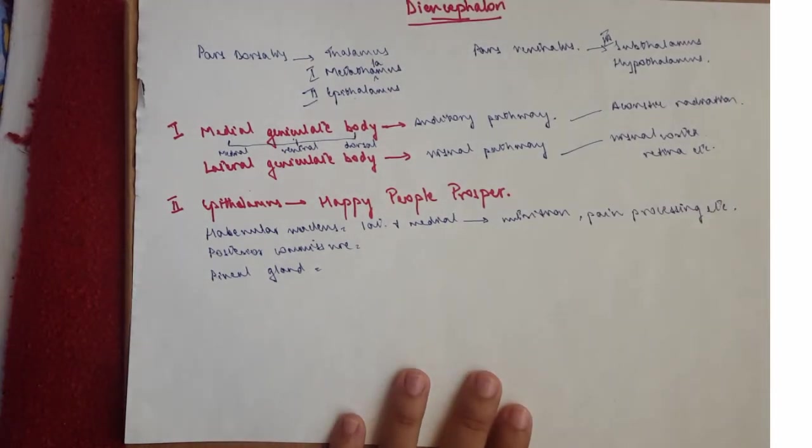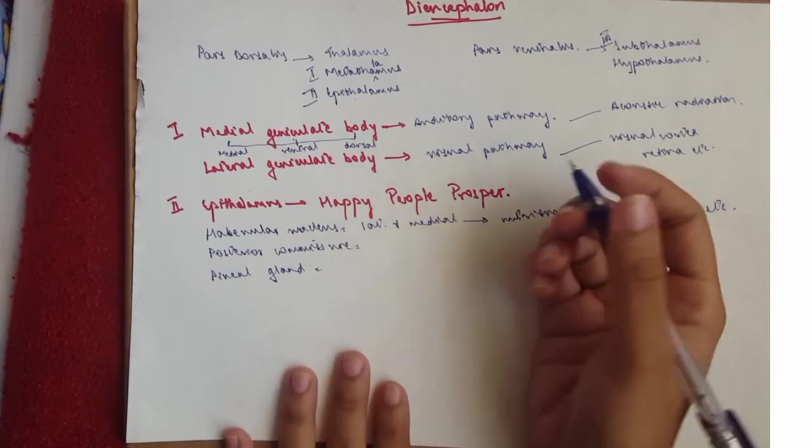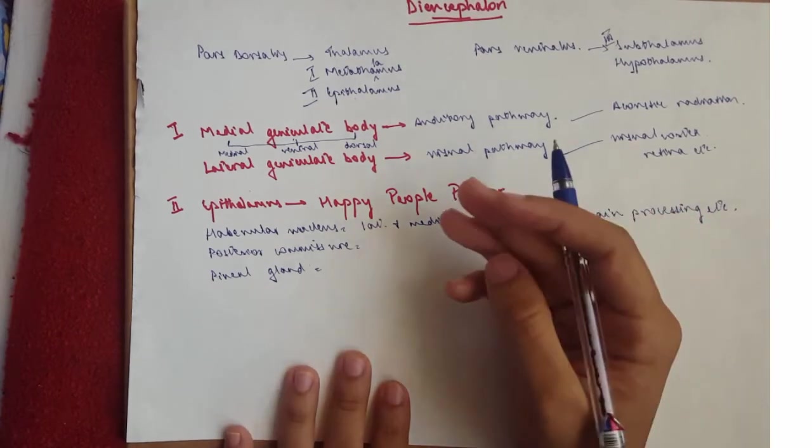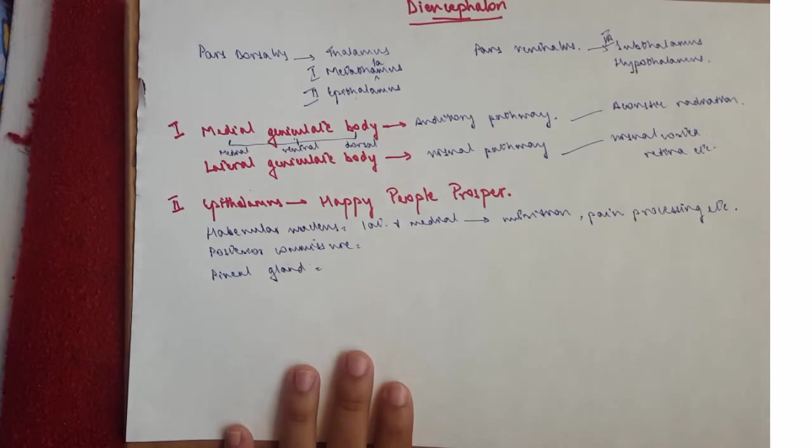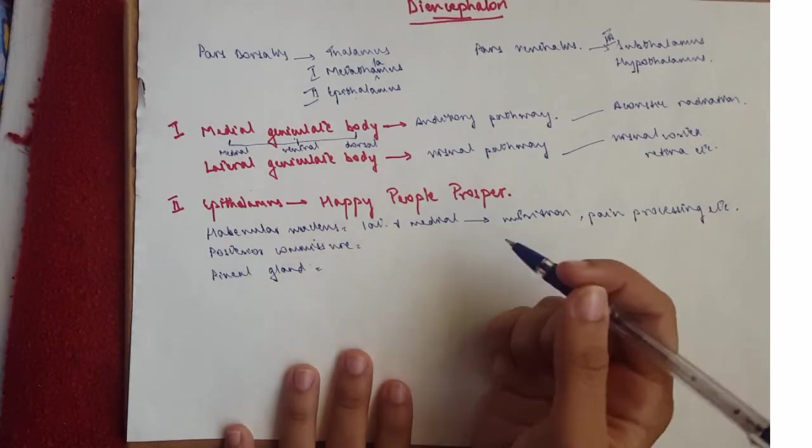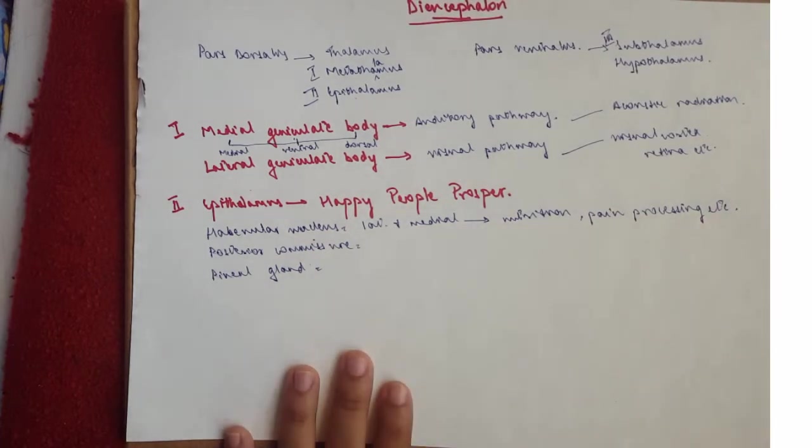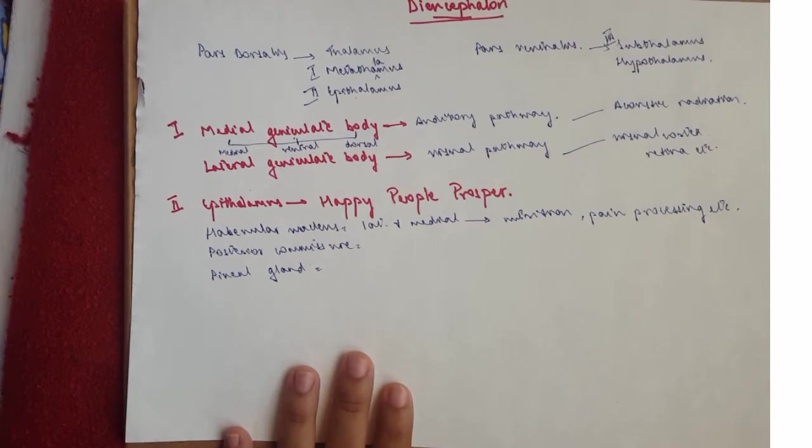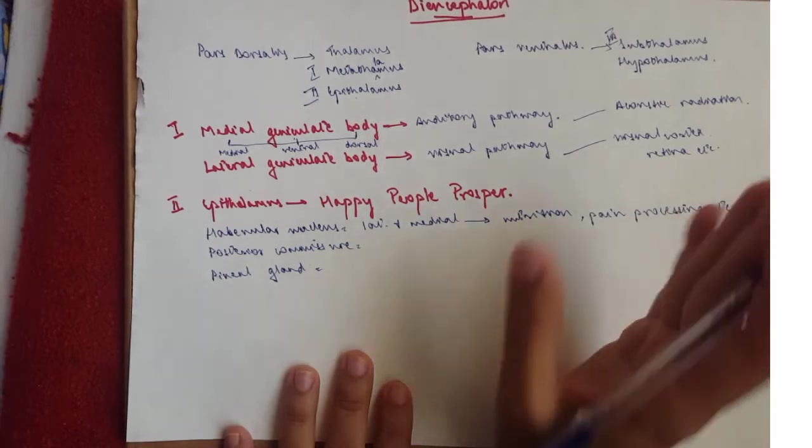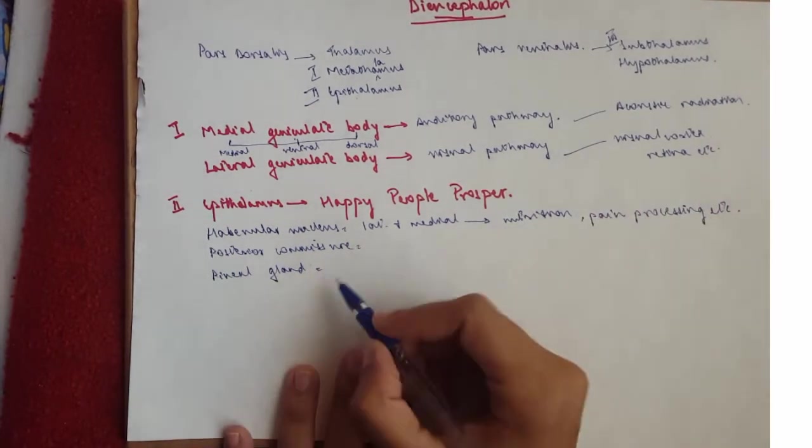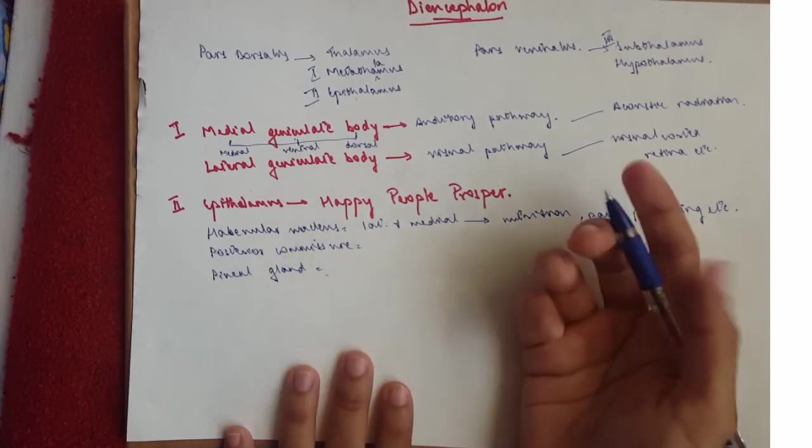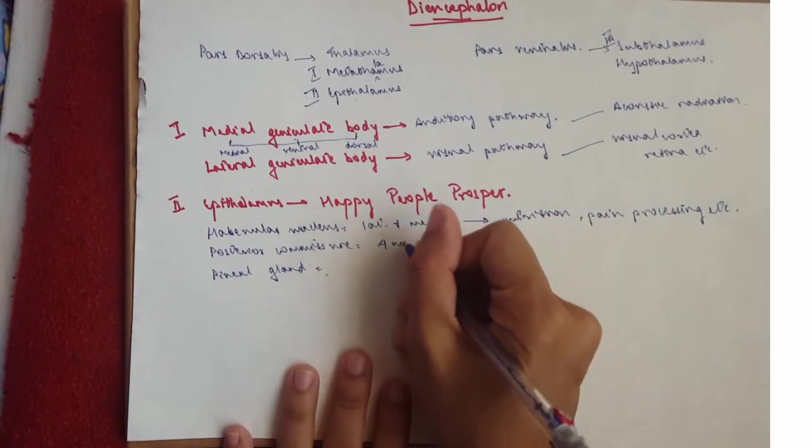Then we've got the posterior commissure, which has four nuclei. It's got the interstitial, dorsal, nuclei of Darkschewitsch, and interstitial nucleus of Cajal. I doubt it's that important, but I've mentioned it. You just need to know that the posterior commissure is part of the epithalamus and it's got four nuclei.